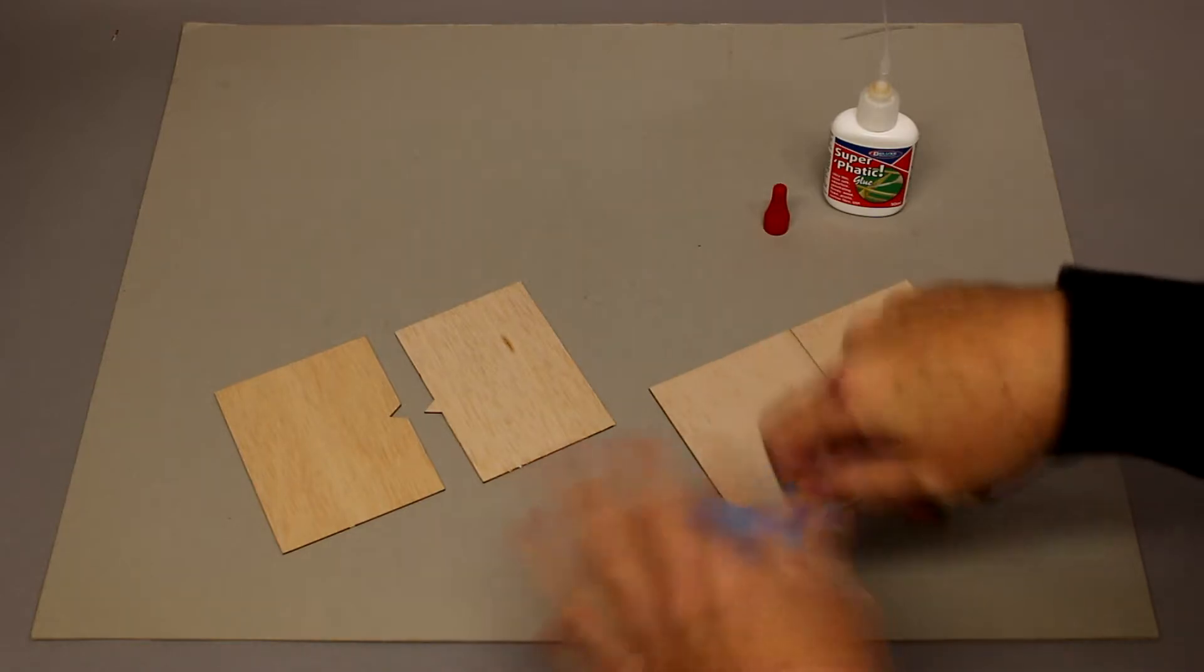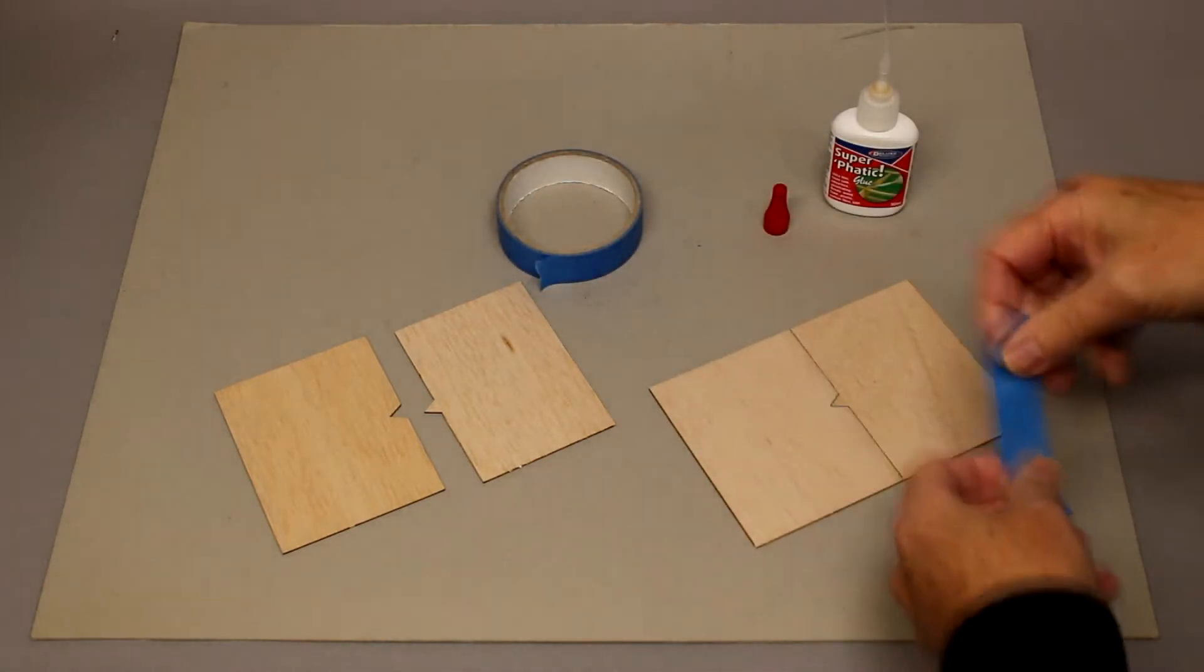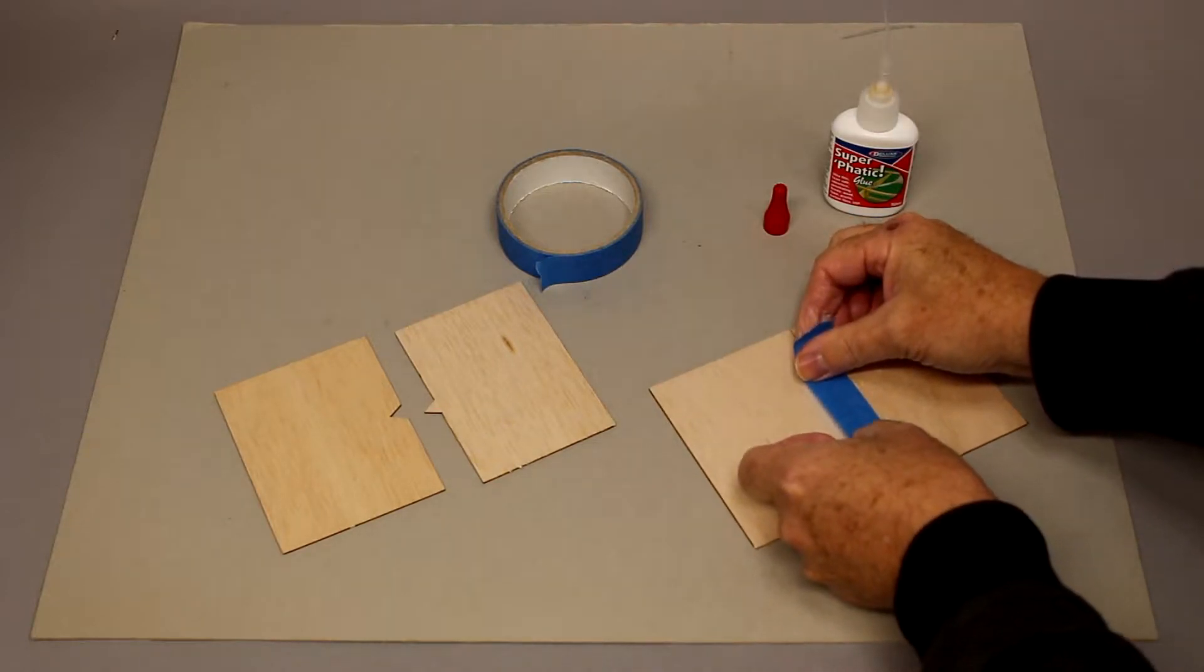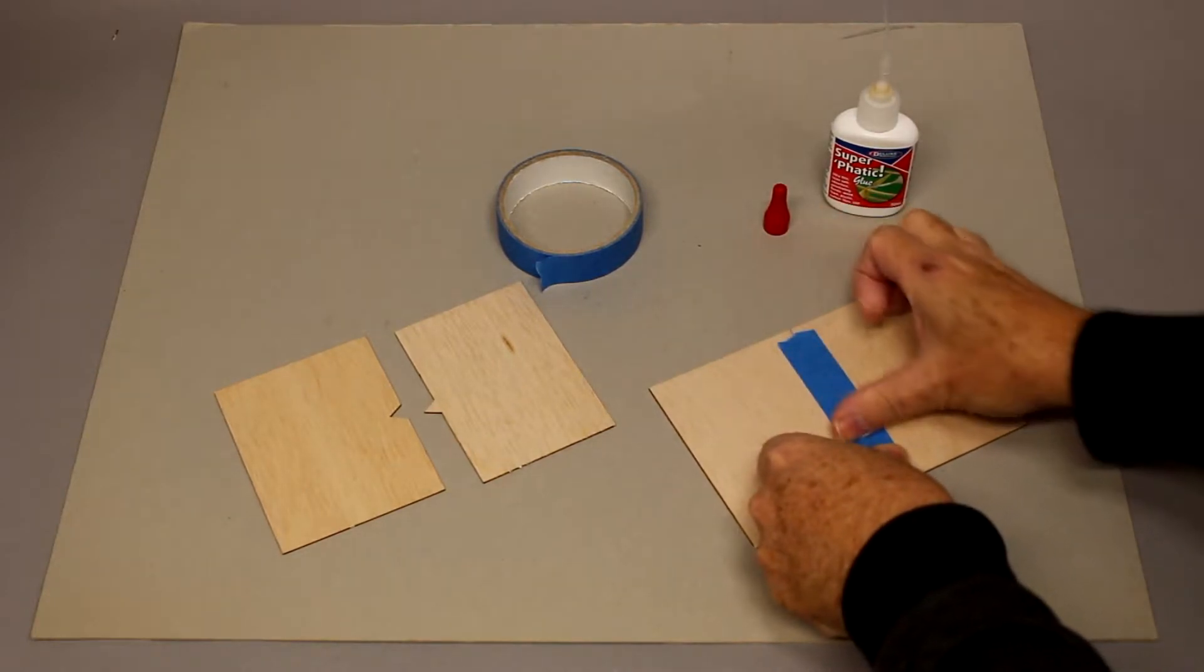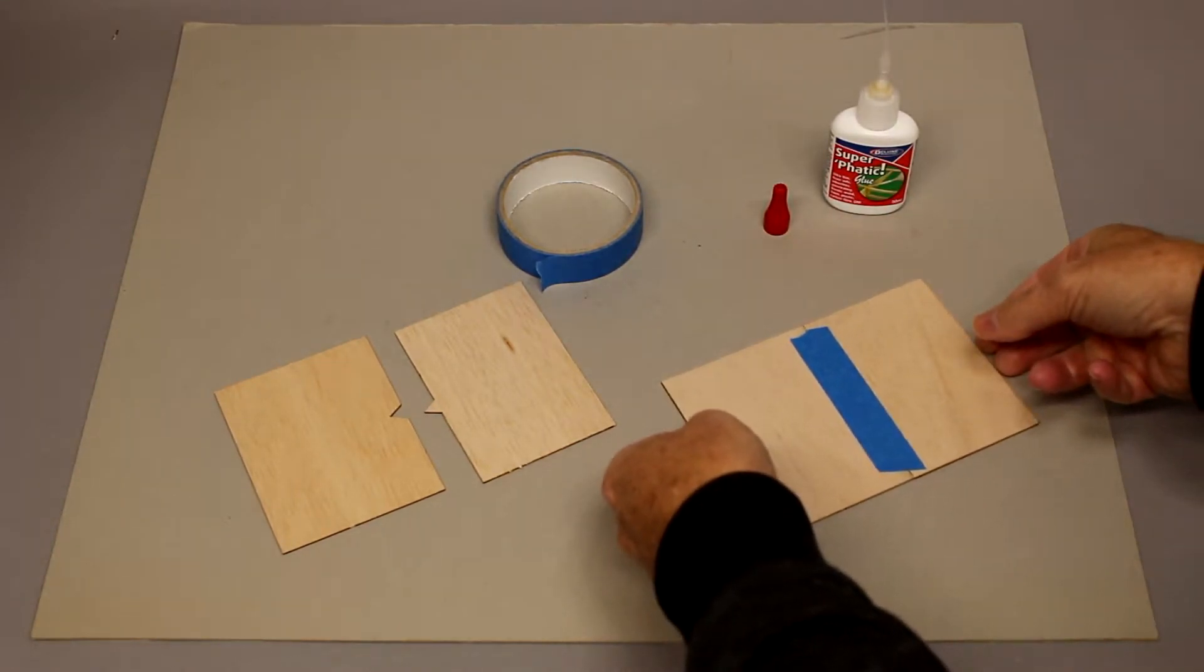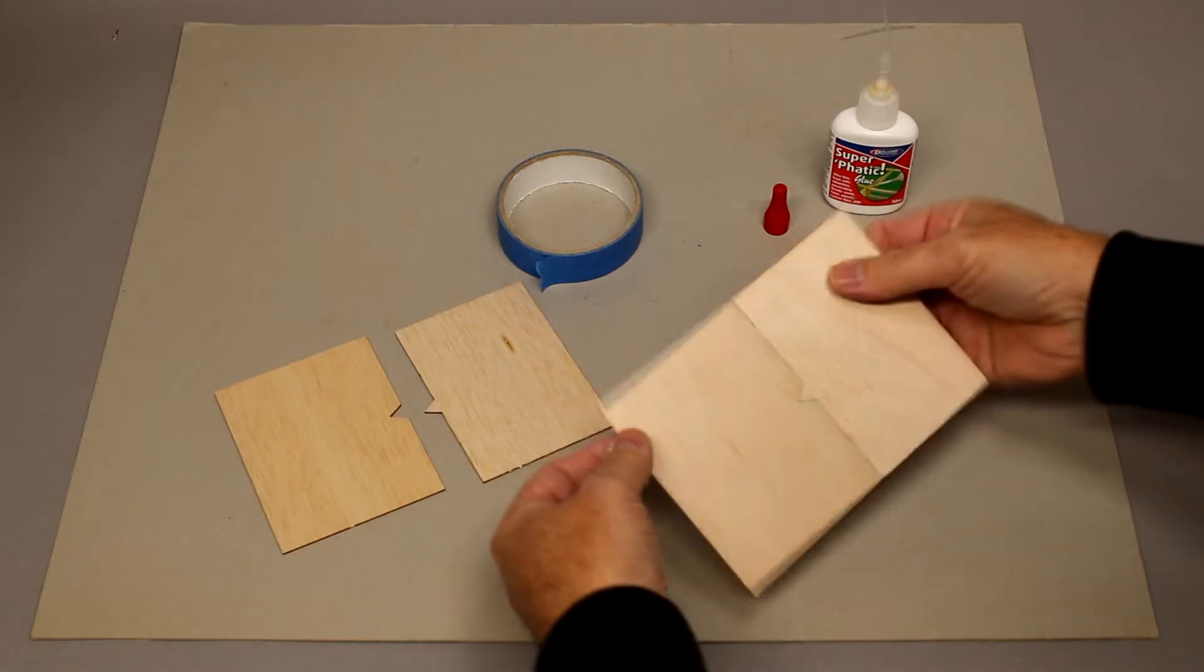Join them with the masking tape. We can now reverse the material, open the joint using the masking tape as a hinge.